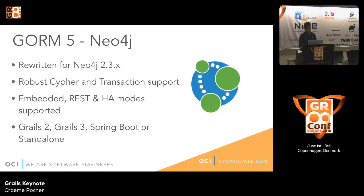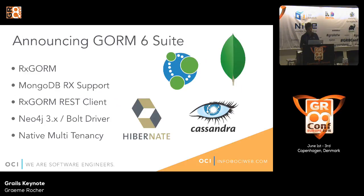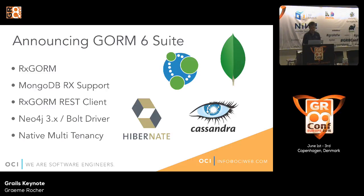We also worked in GORM 5 on Neo4j support for version 2.3, built on top of Cypher, supporting the embedded, REST, and HA modes. That was released simultaneously to the different supported runtimes. Today we want to announce GORM 6, the next major version of GORM that will be included with Grails 3.2.